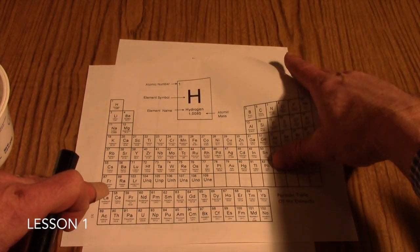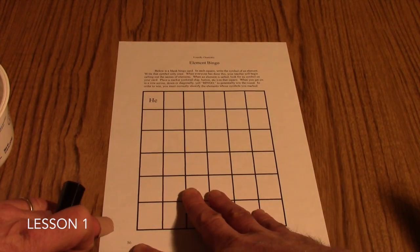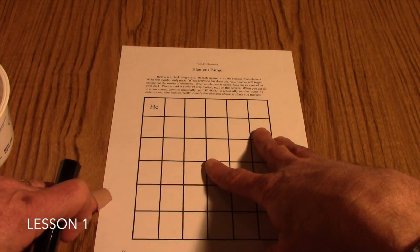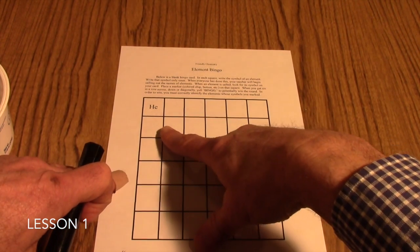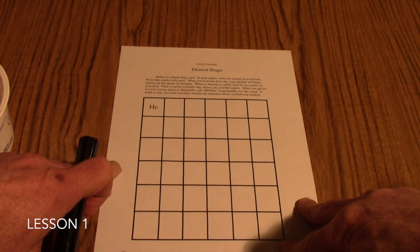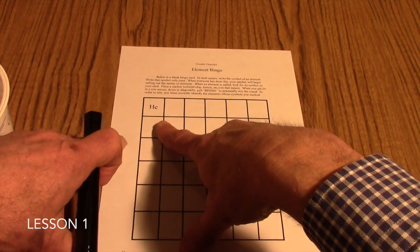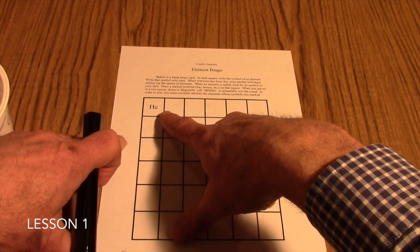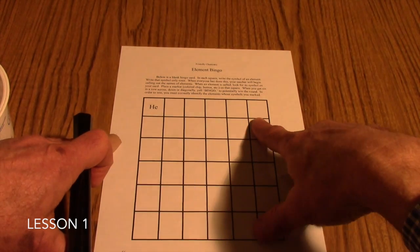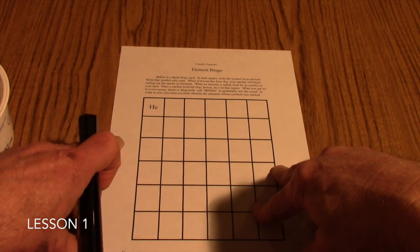The activity for the first lesson is Element Bingo. On page 6 and page 7 in the student text you will find these blank Element Bingo cards. The idea here is for your students to fill out their own Bingo card. You can begin with one card or have your students play two cards. The Element Bingo card is filled out by having the students write element symbols in each of the squares. This is a 6 by 6 Bingo card.